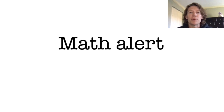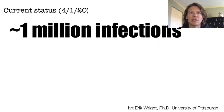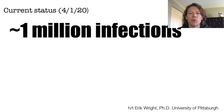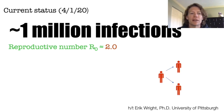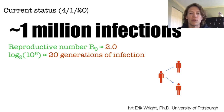To help us understand how this virus population is accumulating mutations and evolving, we're going to have to do a little bit of math — I'll try to make it as painless as possible. As of today, April 1st, 2020, there are approximately 1 million reported infections. This is certainly an underestimate, but it won't affect the following calculations. Let's assume the average reproductive number is 2, which is the number of new infections each infection is causing. The number of times this virus has effectively doubled is therefore log base 2 of 10 to the 6th, which is 20.